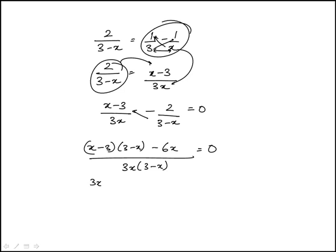So that's 3x minus x squared minus 9 plus 3x minus 6x, and we'll see if any term cancels. Usually they do.